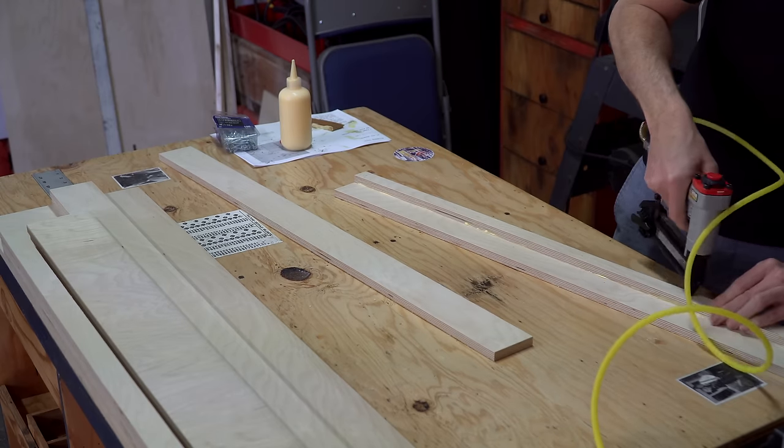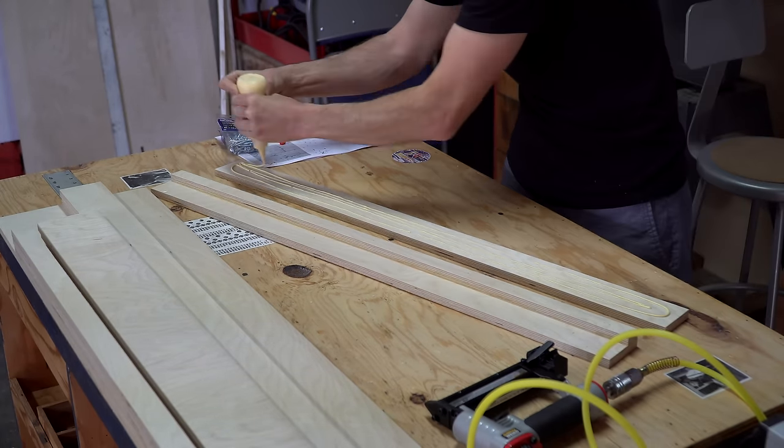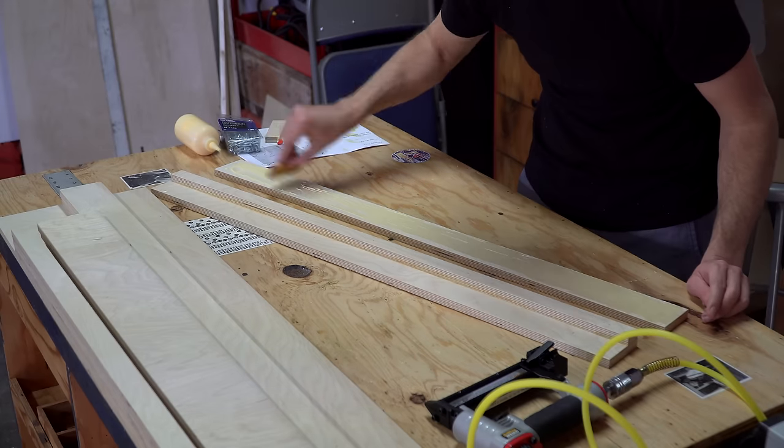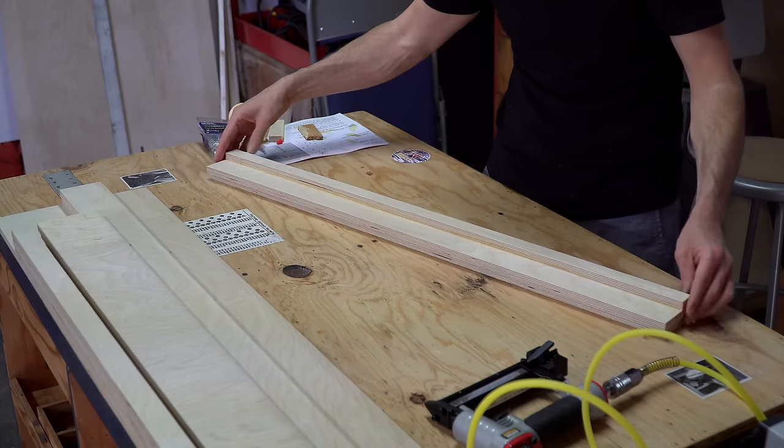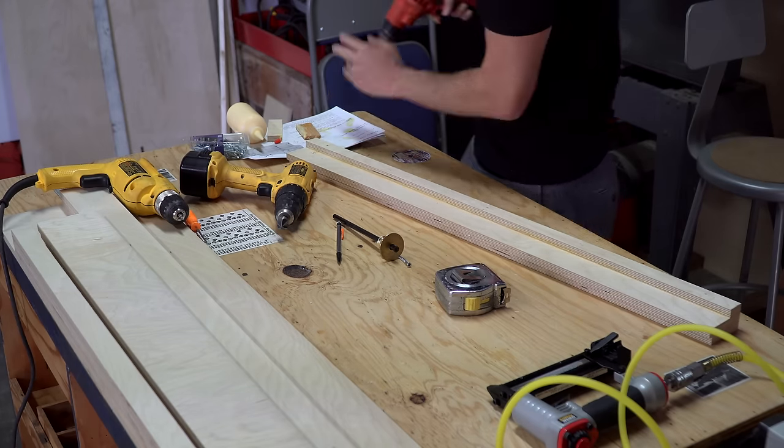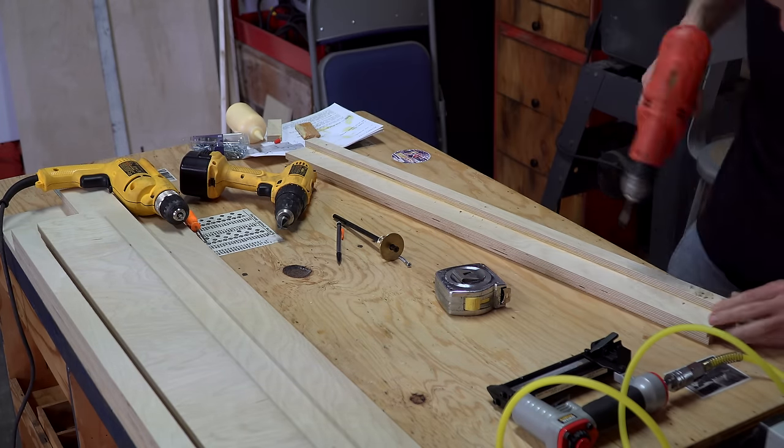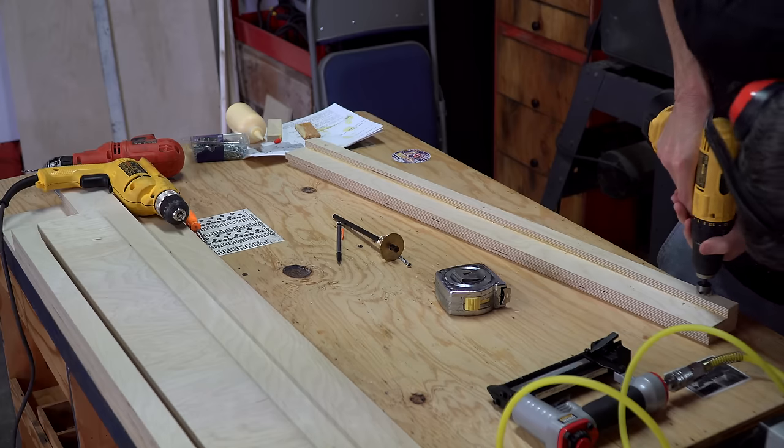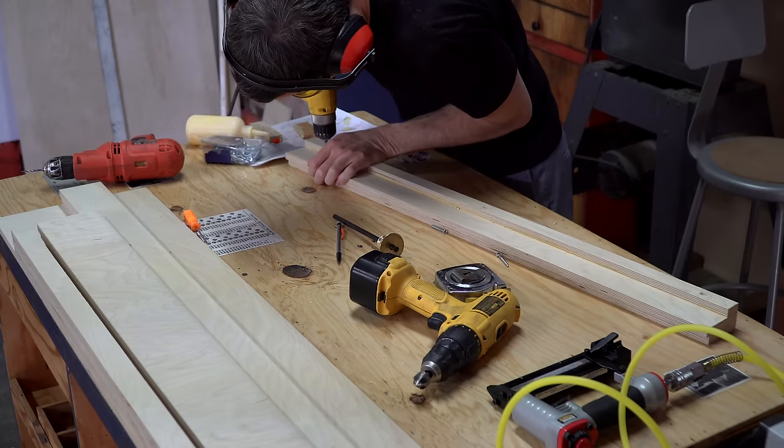The cool thing about pin nails is they don't actually damage the wood at all. They're hardly noticeable, and they do a really good job of keeping the wood from slipping around. Using screws just makes it so I don't have to use clamps and wait for each sub-assembly to dry before I move on to the next portion of the project.